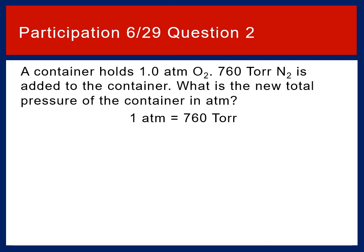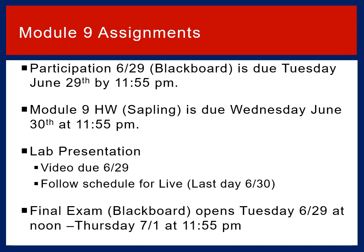Again, a container holds 1.0 atmospheres of O2. 760 torr of N2 is added to the container. What is the new total pressure of the container in atmospheres? One atmosphere is 760 torr. That's two videos down, two questions found on participation 629. Three more videos to go.